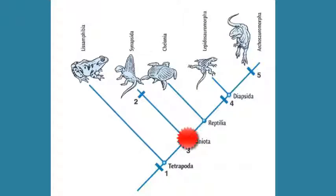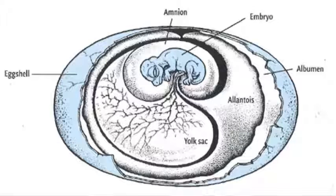One group of tetrapods developed a unique reproductive trait that allowed them to flourish on land and move away from water for reproduction — that trait is the amniote egg. This group of tetrapods which laid eggs with hard shells are called the Amniota, and they include reptiles, birds, and mammals.